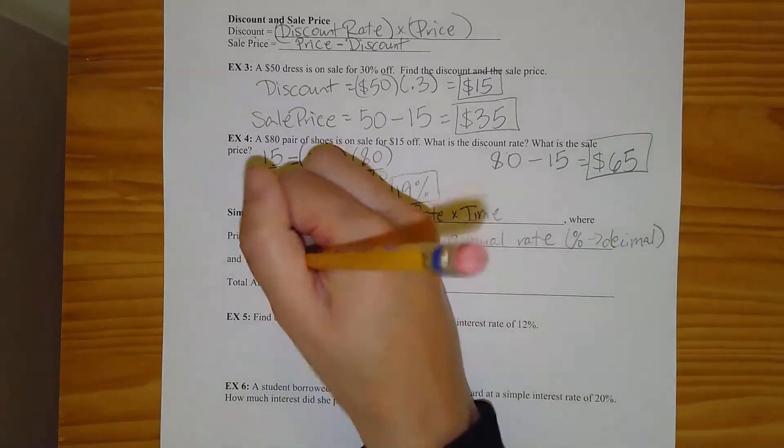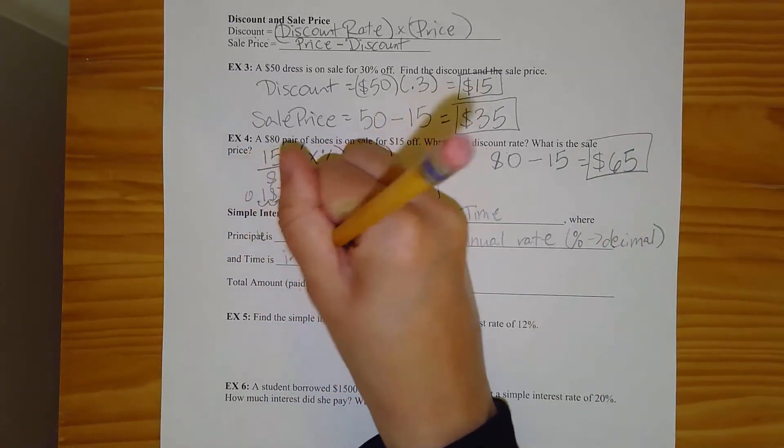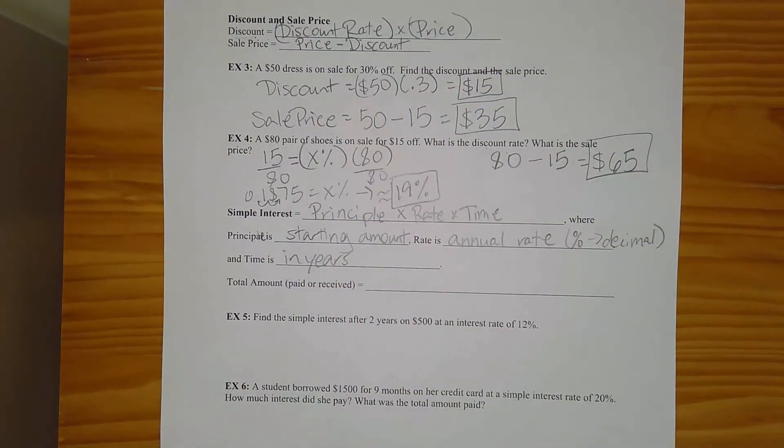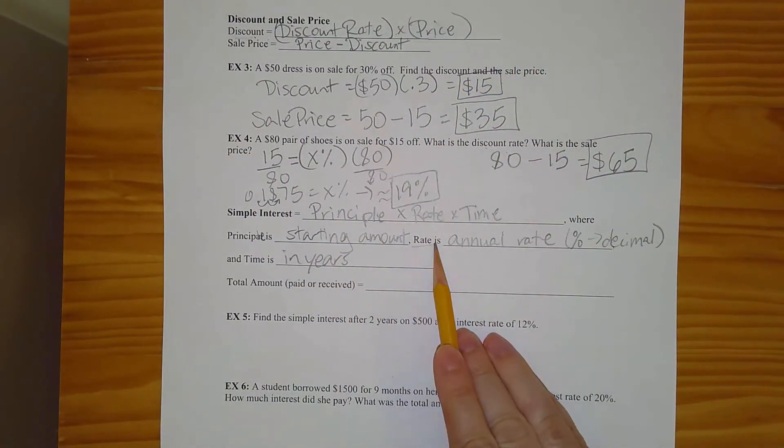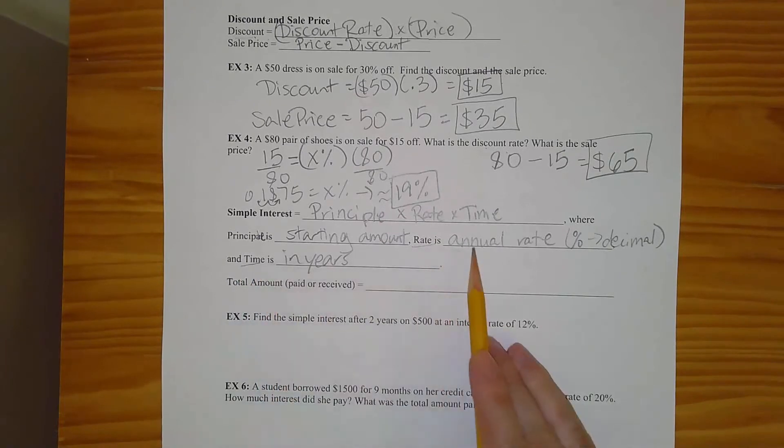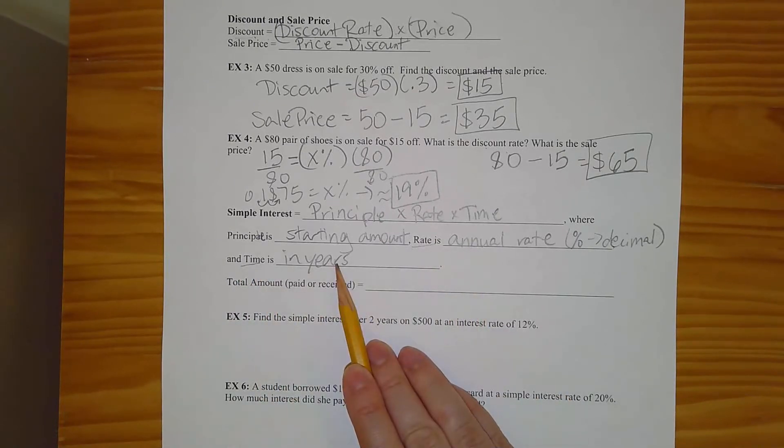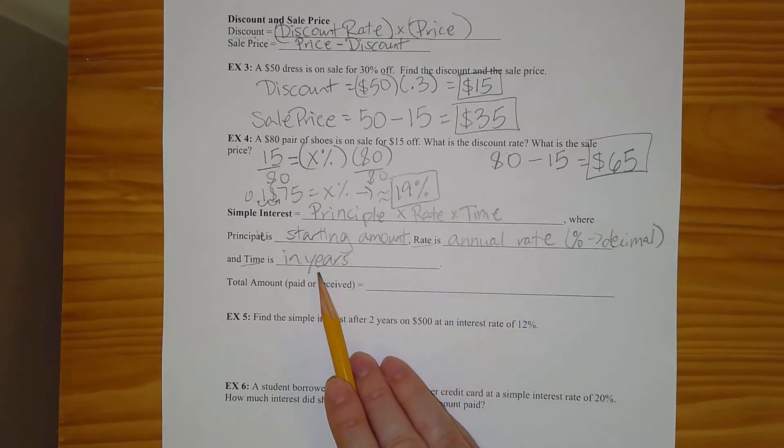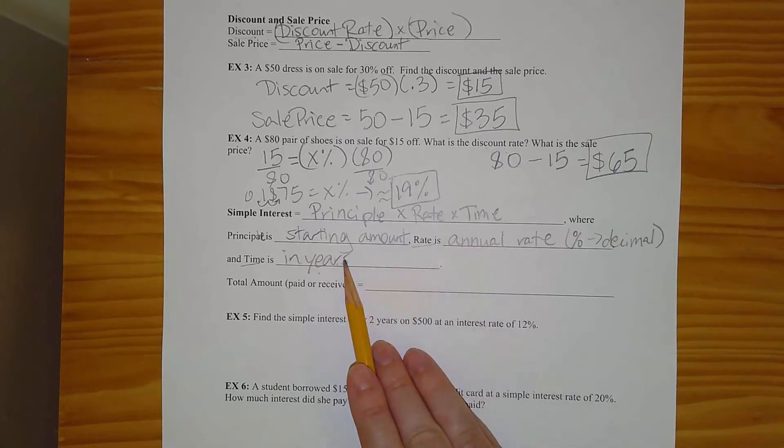The time should be in years. In general, the rate should match up with your time. So if it's an annual rate, your time should be in years. If you ever get a monthly rate, your time should be in months. If you have a daily rate, your time should be in days. So these should always correspond with each other and match up.